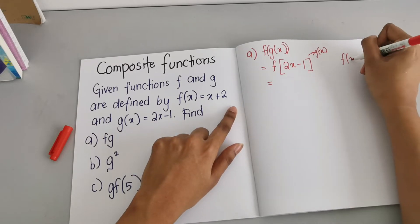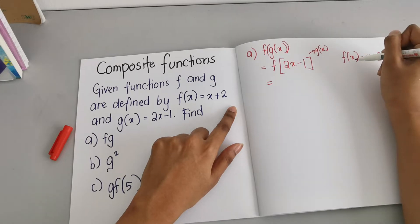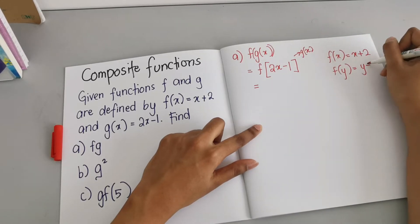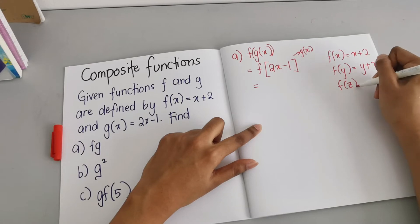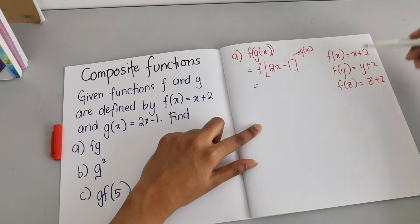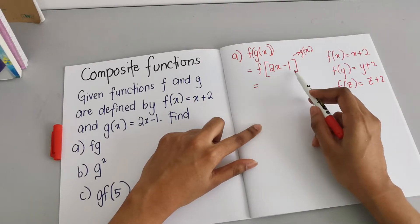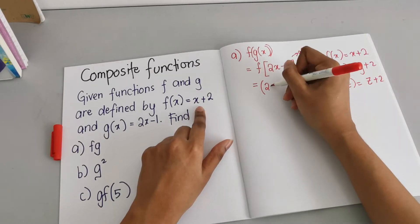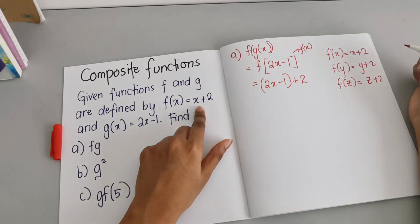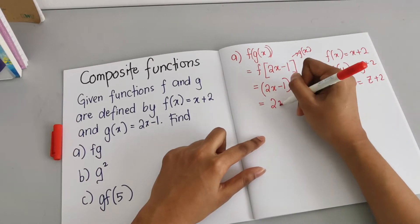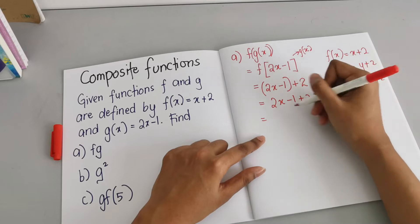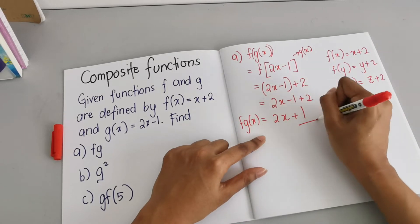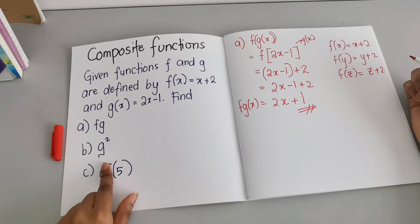Now the next step — what is f(x)? f(x) = x + 2. So when x is replaced: if it's y it's y + 2, if it's z it's z + 2. Since here we have f(2x − 1), we replace x with (2x − 1), giving us (2x − 1) + 2. Opening the bracket: 2x − 1 + 2 = 2x + 1. So this is our function fg(x).